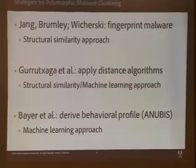Fingerprinting is also a common method. Brumley, Jang, and Wicherski published fingerprinting algorithms for clustering malware — if you're doing this for fun or professionally, look up their papers. A group based in Spain used distance algorithms to project malware into Euclidean space, where similar malware will be close to each other. Bayer et al., another group based in Germany, used machine learning to derive a behavioral profile of malware — this system is still available for anyone to use; it's called Anubis.